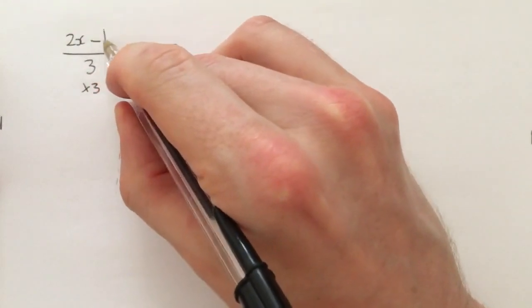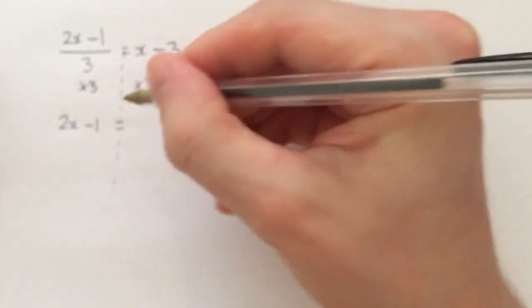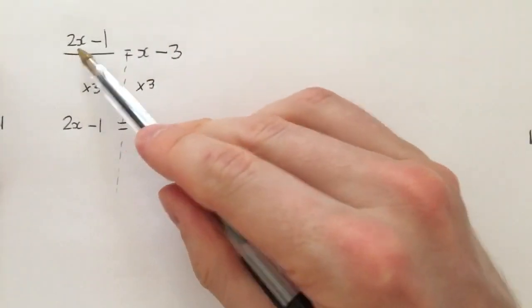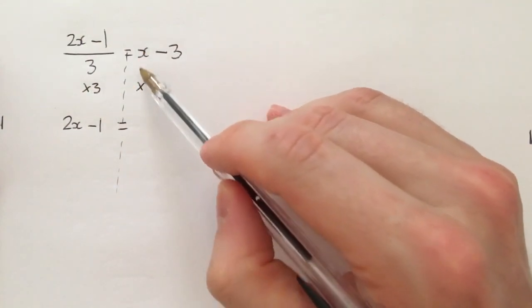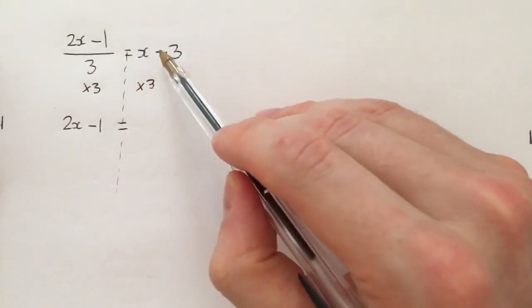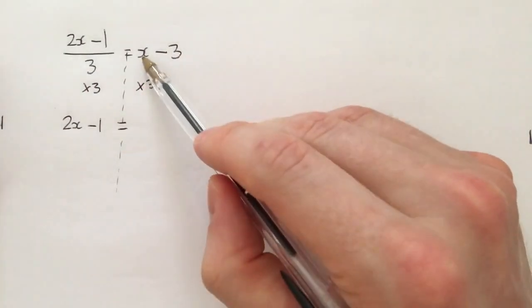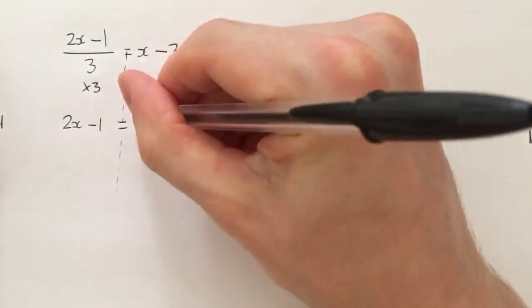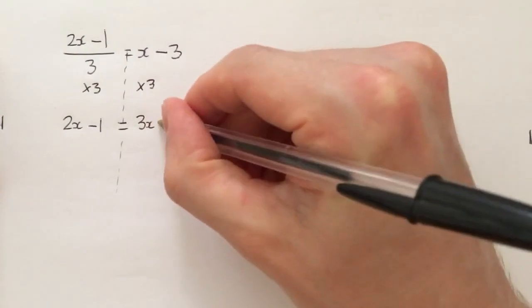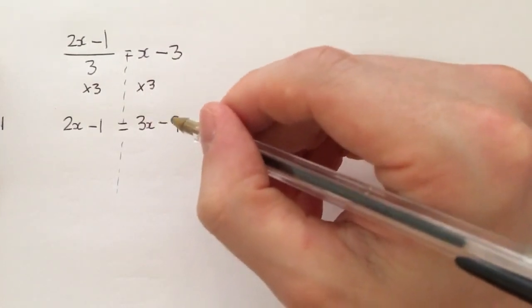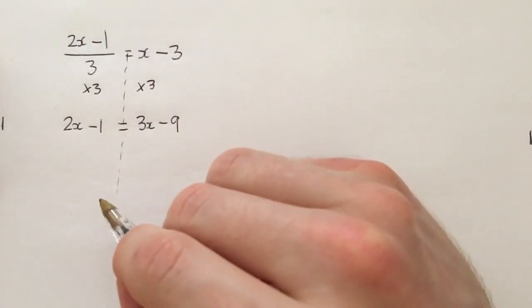So I'm just left with on my left hand side 2x take away 1 equals. Now this is where we've got to be very careful. We know that we multiplied by 3 here. I don't just multiply the x by 3 or I don't just multiply the negative 3 by 3. I multiply both the x and the negative 3 by 3. So x times 3 is 3x, negative 3 times 3 is negative 9.